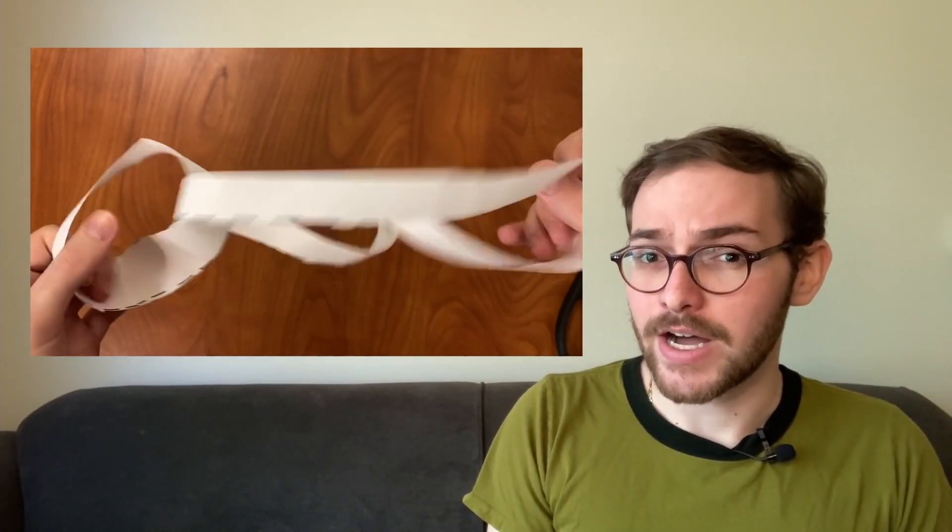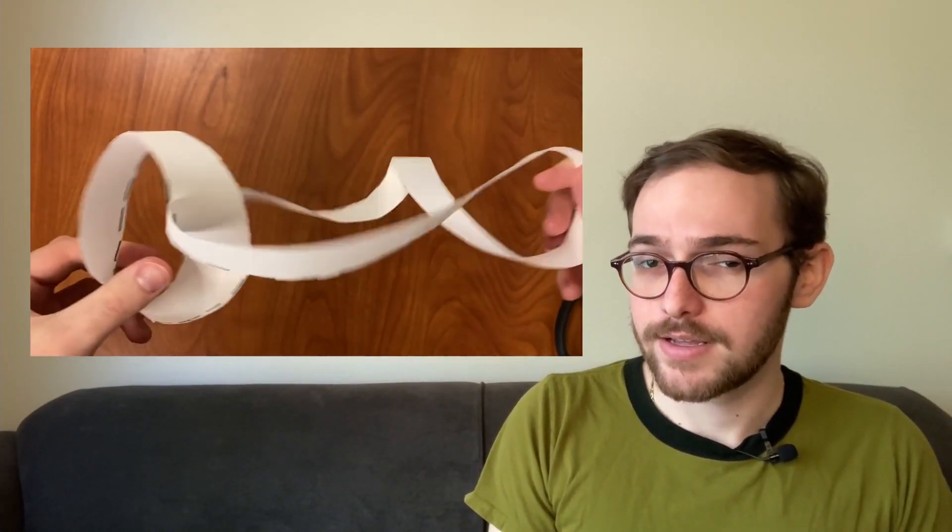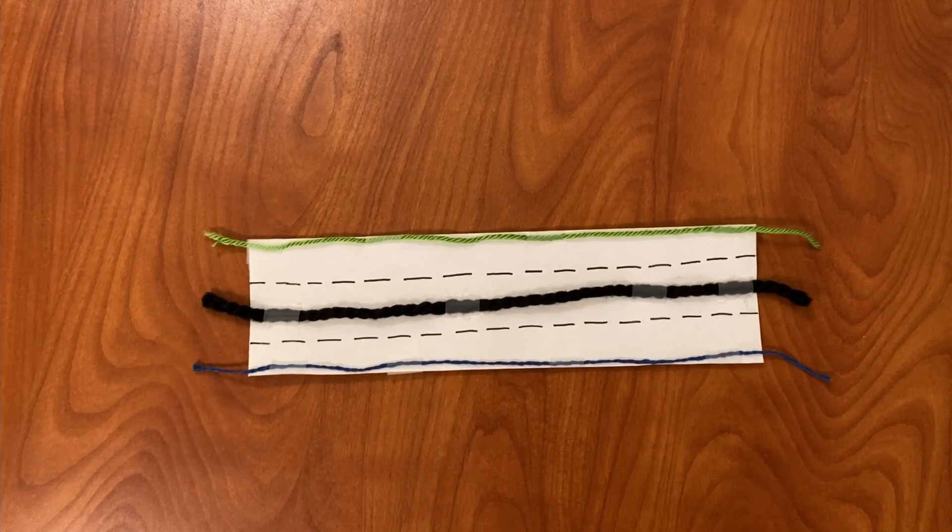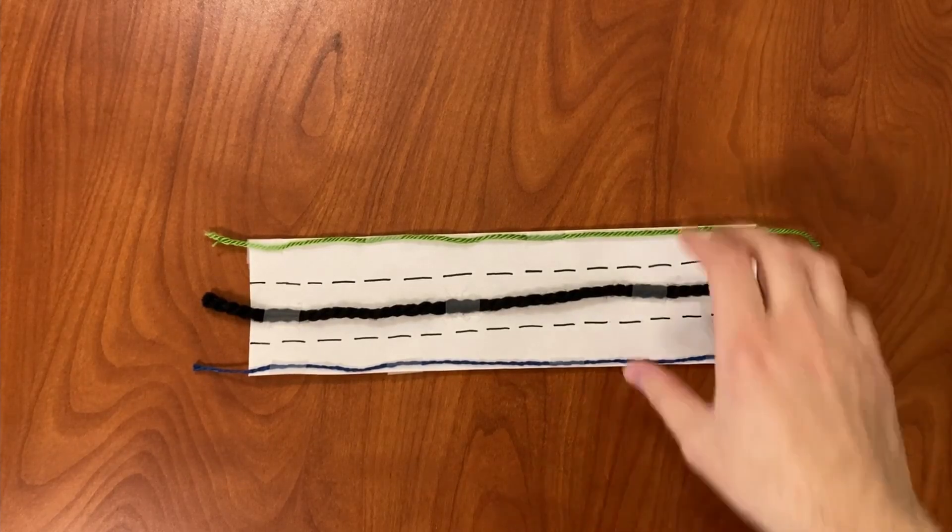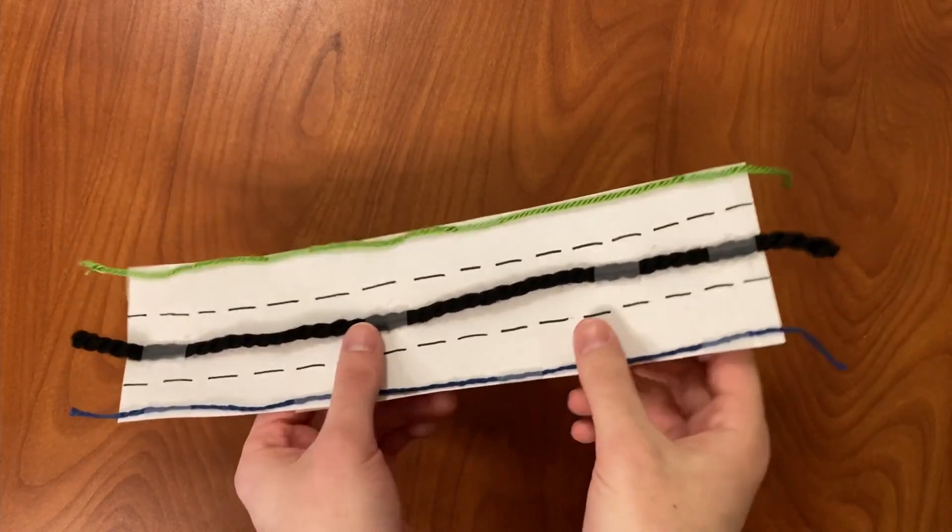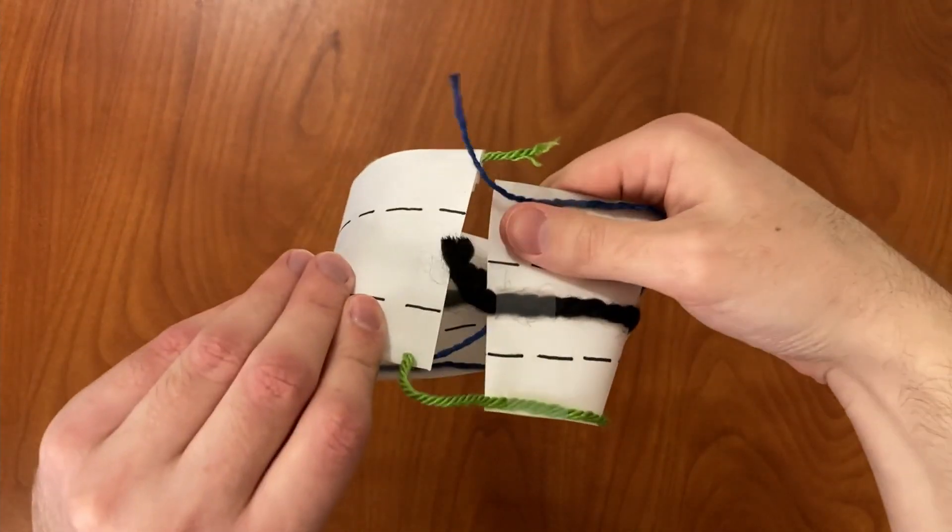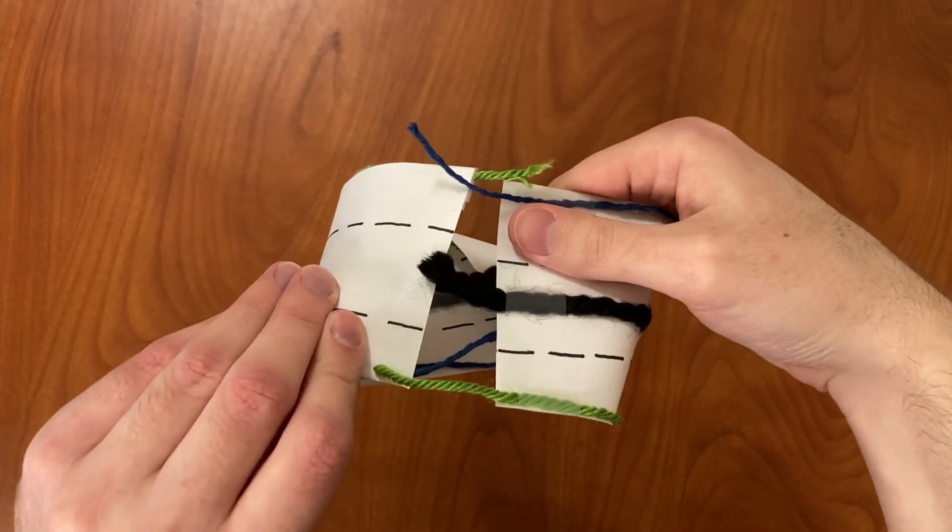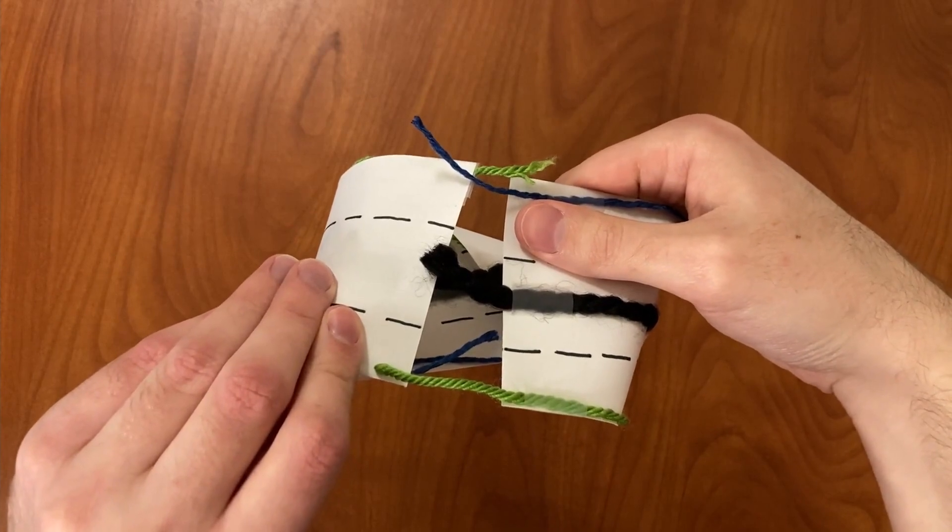Now what about when I cut a third of the way down? This time we need three strings, one for the top, the bottom, and the middle. We're going to do the same process of taping the Mobius strip together and connecting the strings along the way.